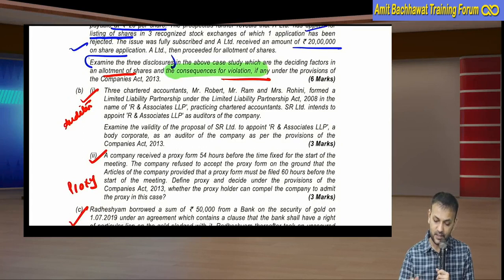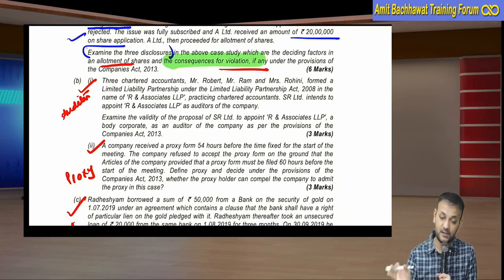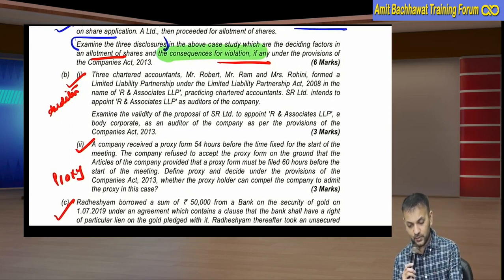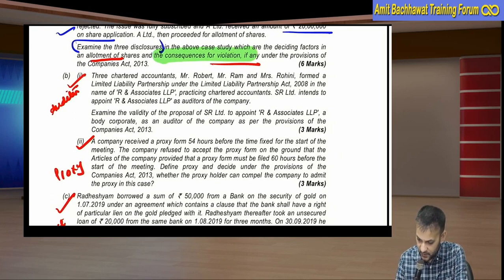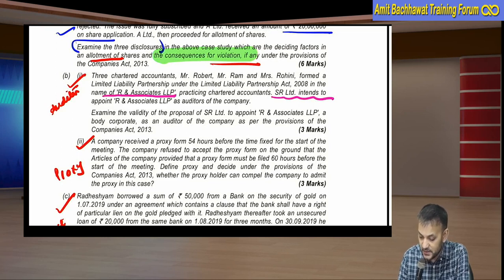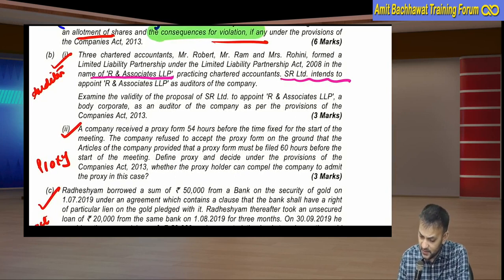The next question, parts (b)(i) and (b)(ii), are 3 marks each. Sometimes part B has a composite 6-mark question, and sometimes two separate 3-mark questions. Now, question B(i): Three chartered accountants - Mr. Robert, Mr. Ram, and Mrs. Rohini - formed an LLP named RN Associates LLP, practicing chartered accountants. SR Limited intends to appoint RN Associates LLP as auditors of the company. Examine whether they can appoint RN Associates LLP, a body corporate, as auditor.